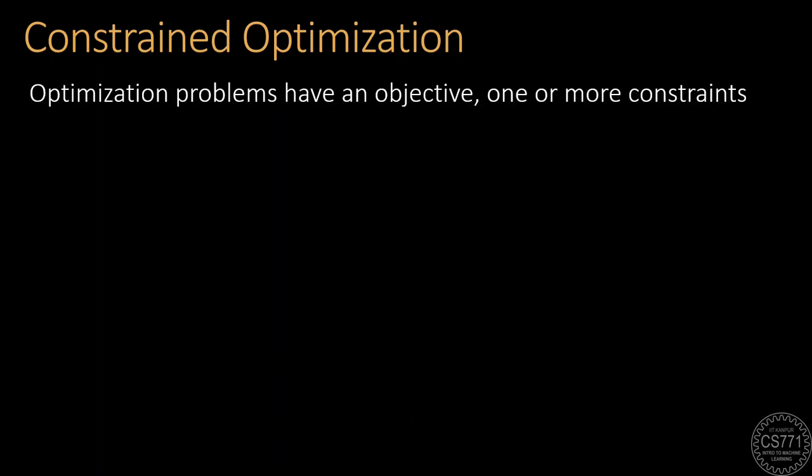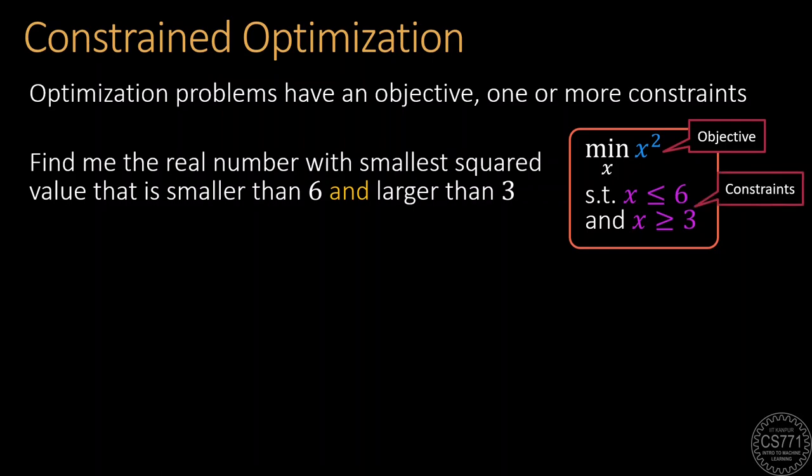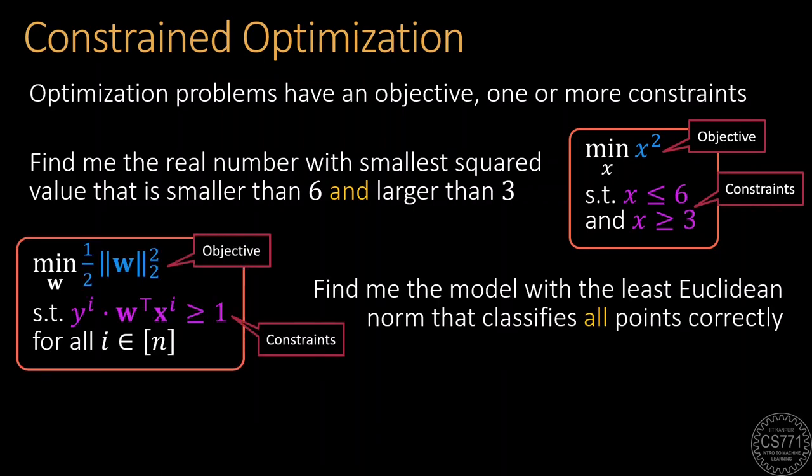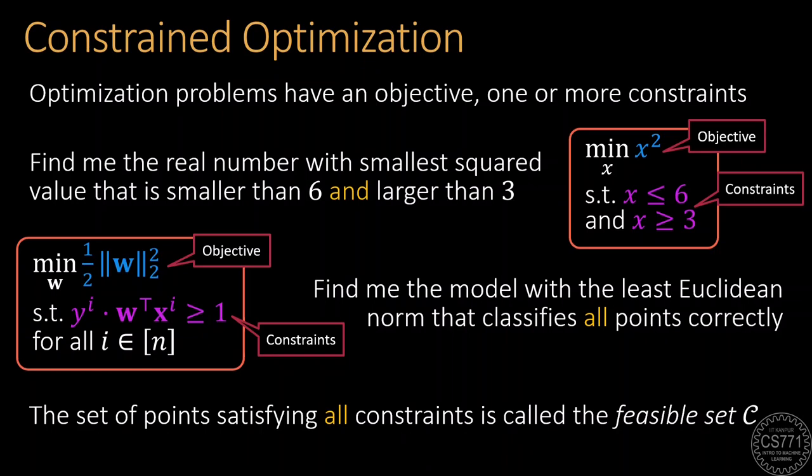To recapitulate a bit, a constraint optimization problem has an objective function and one or more constraints. Points that satisfy every single one of those constraints are said to be in the feasible set.